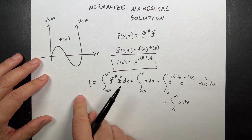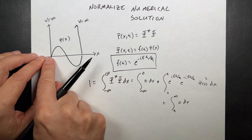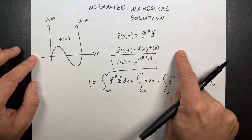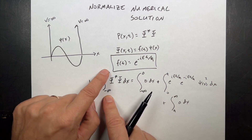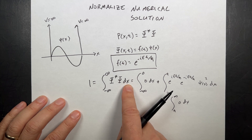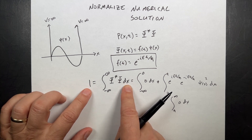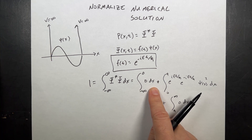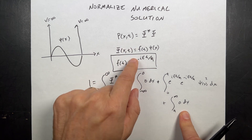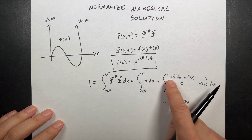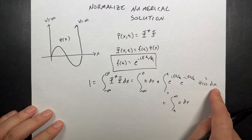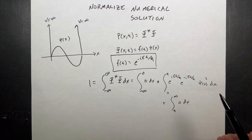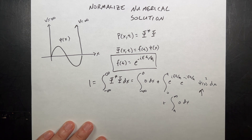When we normalize, we're saying that if you add up the probability density over all space, you have to find the particle somewhere. So the integral from negative infinity to infinity of the probability density should equal one. That gives us zero contributions where the function is zero, so we're left with just the integral from zero to a of psi squared dx. But we can't calculate that analytically because I don't have a function — I just have data points.